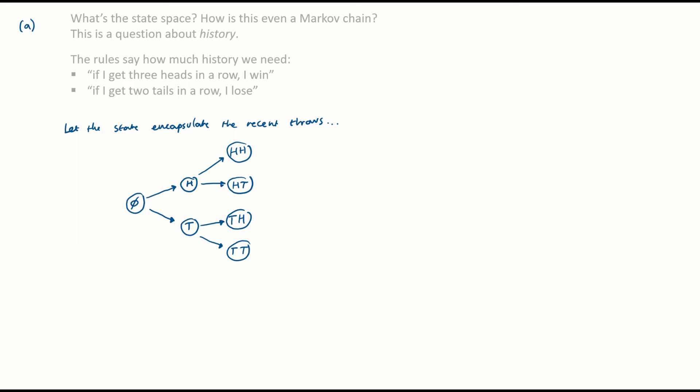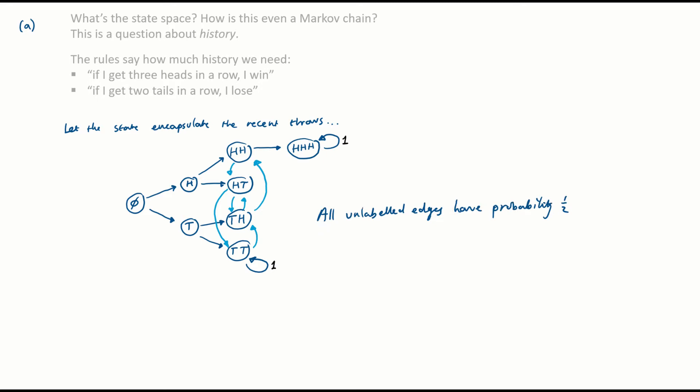Now it gets more interesting. Looking at the bottom state tails-tails — that's the state where I've lost, and the question tells us what to do: a state TT to represent 'lost' with a single outgoing transition back to that state. Then obviously we should do the same for heads-heads-heads. If we're in state HH and throw another heads, we enter the win state and get stuck there. All the other transitions: TT loops back with probability 1, and all other states have two equally likely transitions out, so those edges each have probability one half.